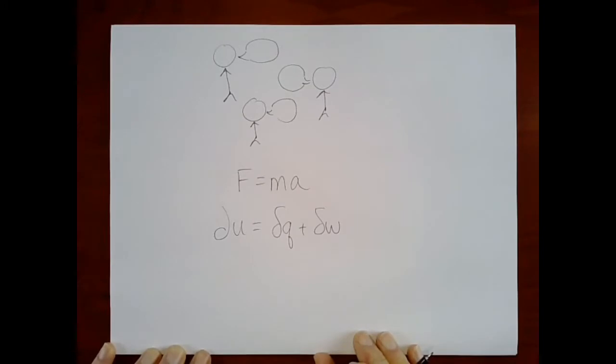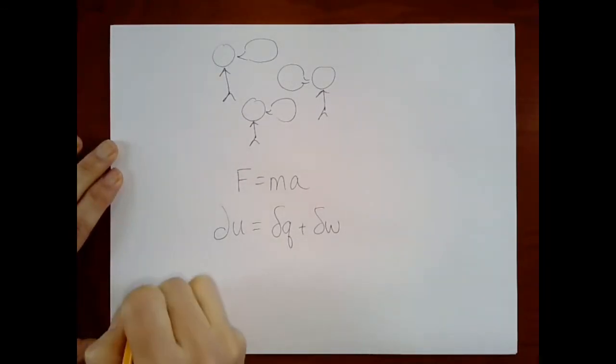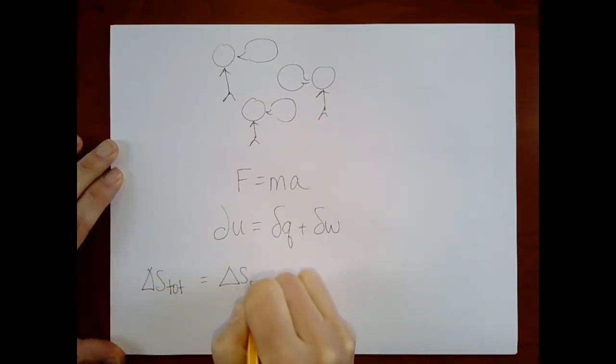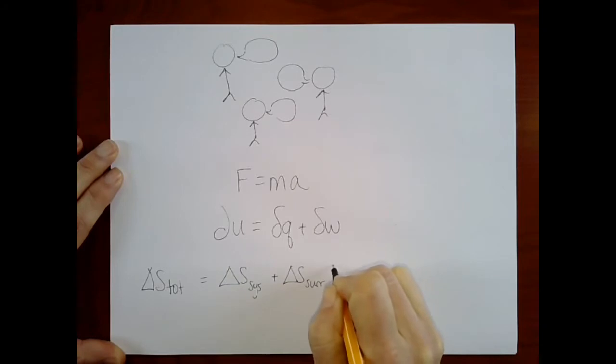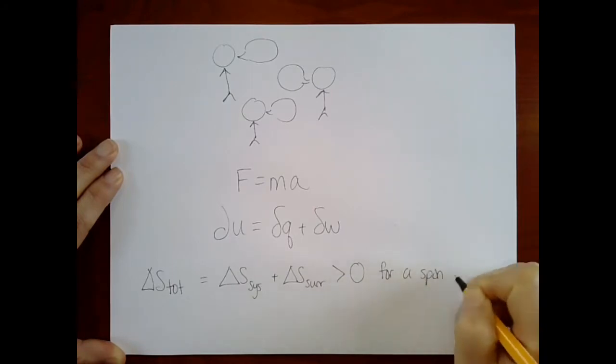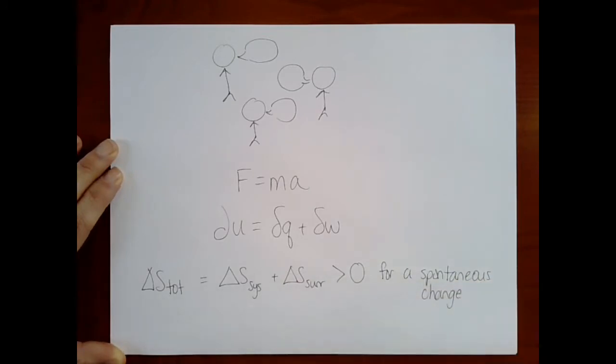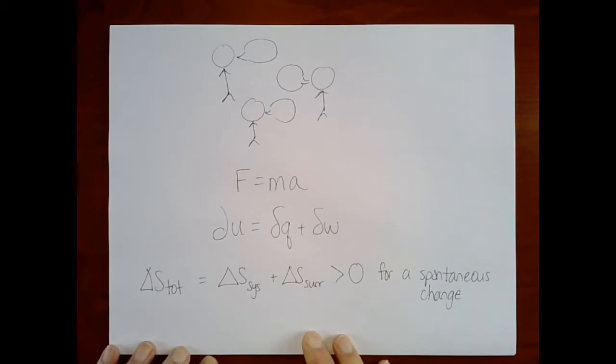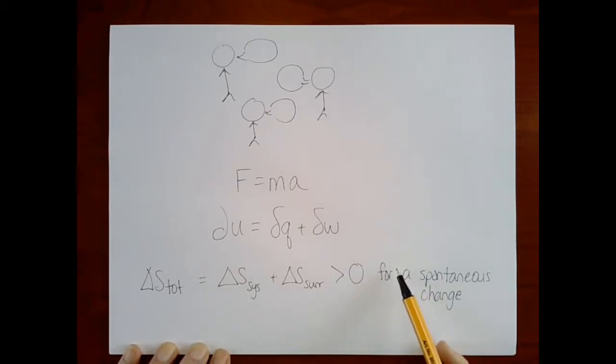So we're gonna do the same thing with the second law, and an equation that describes the second law is that the change in the total entropy—and by total entropy I mean we have to consider the entropy of the system and the entropy of the surroundings—the change in the total entropy must be greater than zero for a spontaneous change. What's comforting about this is that it's quite tidy and easy to remember, and I think we already walk around with the impression that it's easier for entropy to go up. It's easier for disorder to take over. So there's something that aligns with our intuition about this equation.